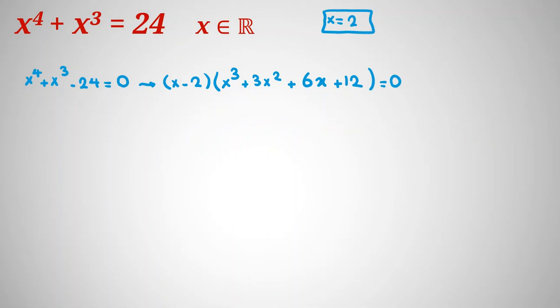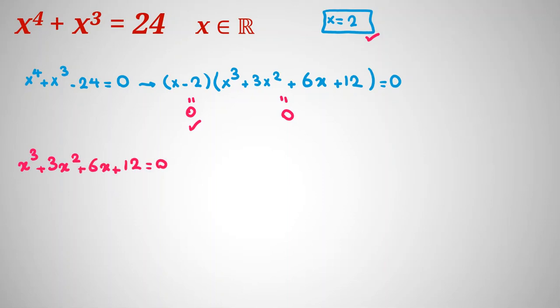The product of two factors equals zero means the first factor equals zero or the second factor equals zero. The first factor gives x equal to 2, which we already found. Now we need to solve the second factor: x cubed plus 3x squared plus 6x plus 12 equal to 0.